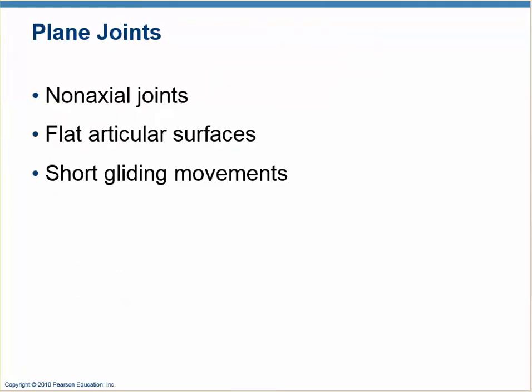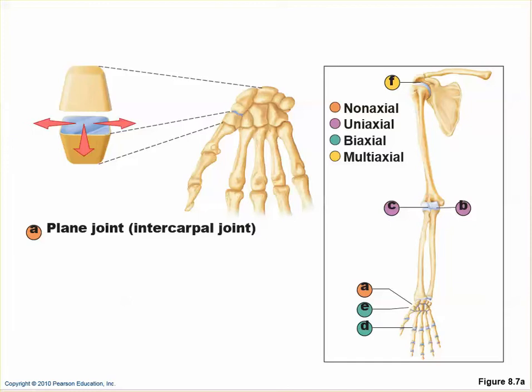Plane joints are flat surfaces — they have what are called facets. Because the two surfaces are flat, the only motion that can happen between them is a gliding motion, limited by the ligaments that cross the joint and by the joint capsule. They tend to be fairly short, non-axial gliding motions. The intercarpal joints are an example, as are the facet joints of the spine. Anytime you see the word facet, it probably means gliding occurs there and the joint is a plane joint.